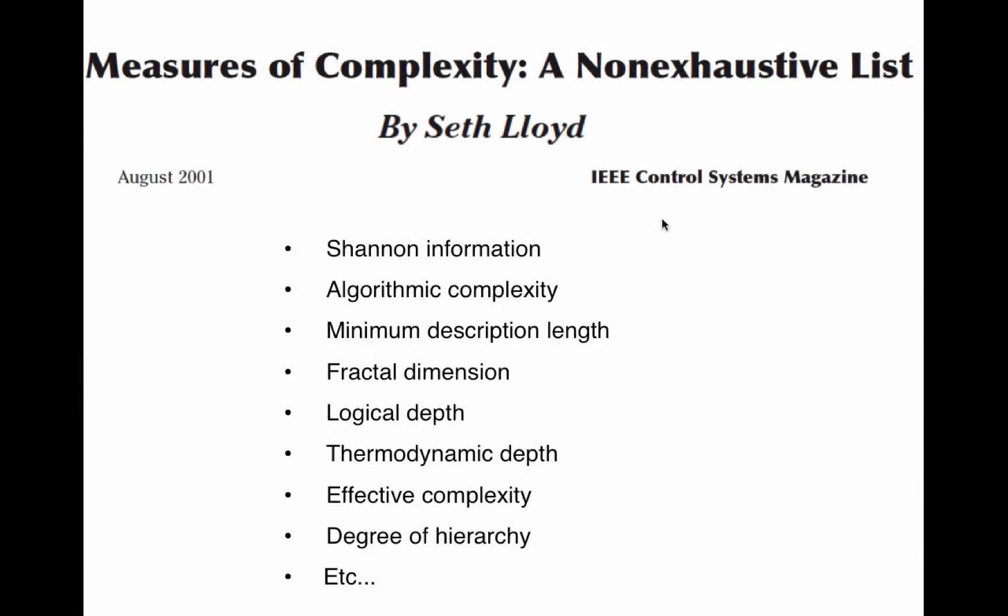So how do complex systems researchers measure the complexity of a system? Seth Lloyd's paper, called Measures of Complexity, a Non-Exhaustive List, gives something like 42 different definitions or ways of measuring complexity, including Shannon information, algorithmic complexity, fractal dimension, thermodynamic depth, etc.